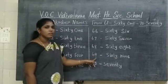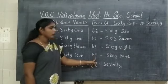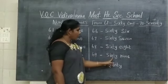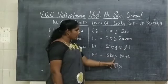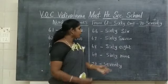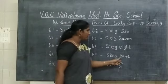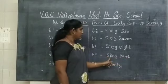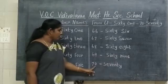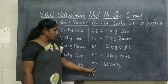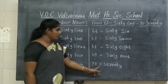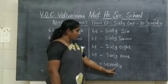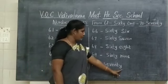6, 9 — 69. Yes, S-I-X-T-Y N-I-N-E. 69. 7, 0 — 70. S-E-V-E-N-T-Y. 70.